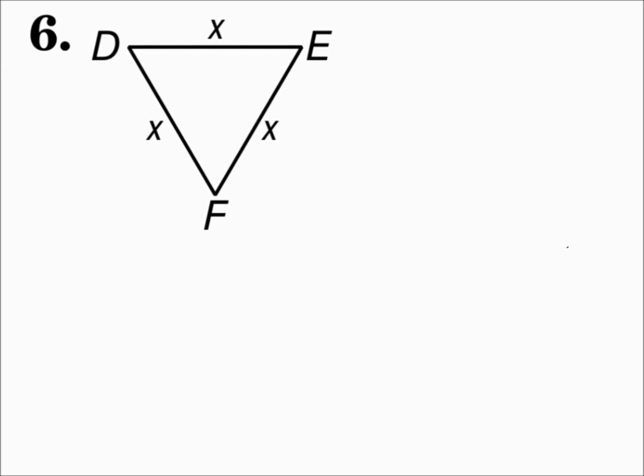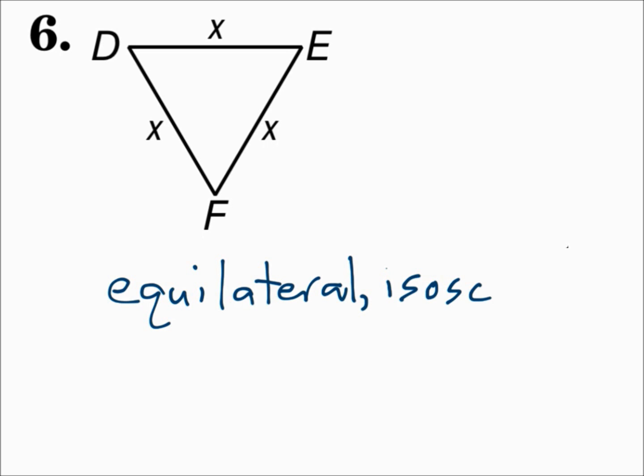Number six — all sides are congruent, so it's equilateral. And since at least two sides are congruent, it's also isosceles. Remember, equilateral triangles are always isosceles. Scalene triangles have all sides of different lengths. Isosceles triangles have at least two sides congruent, and equilateral triangles have all three sides congruent.